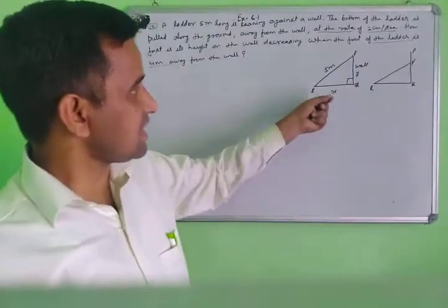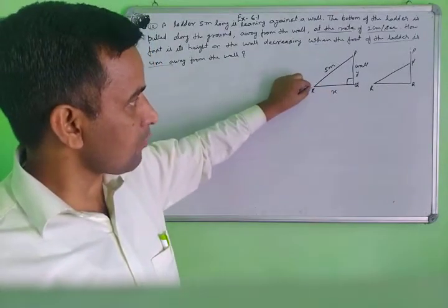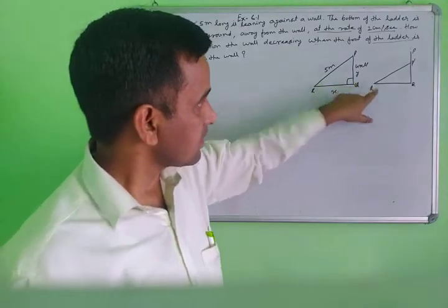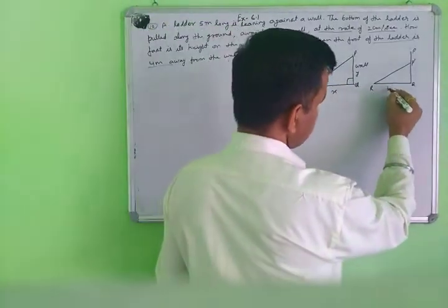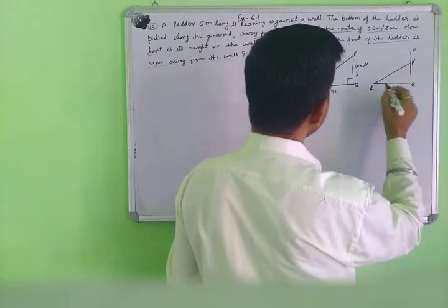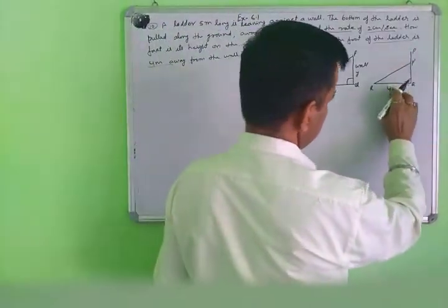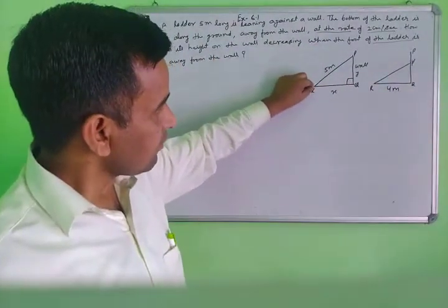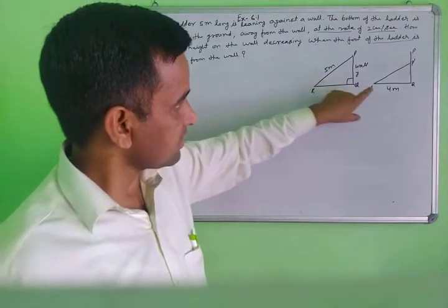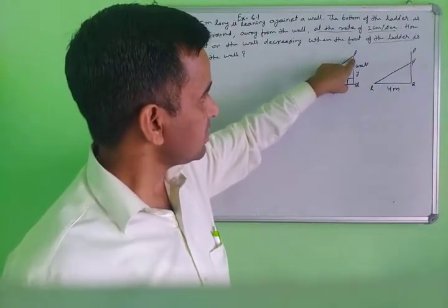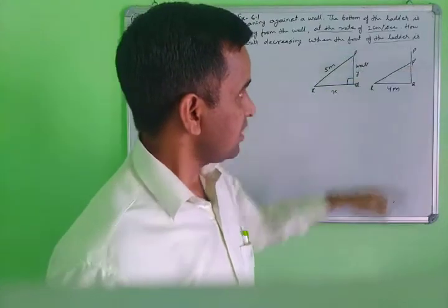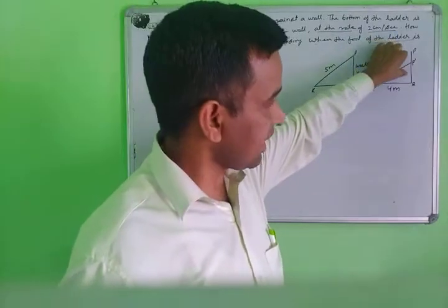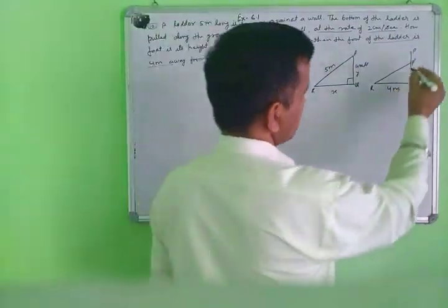The ladder is pulled from the bottom side along the ground. This distance will be converted to 4 meters. When you pull the ladder along the ground, it comes to a new position — the ladder converts to this new position. In which rate does the ladder fall? That means we need to find dy over dt.